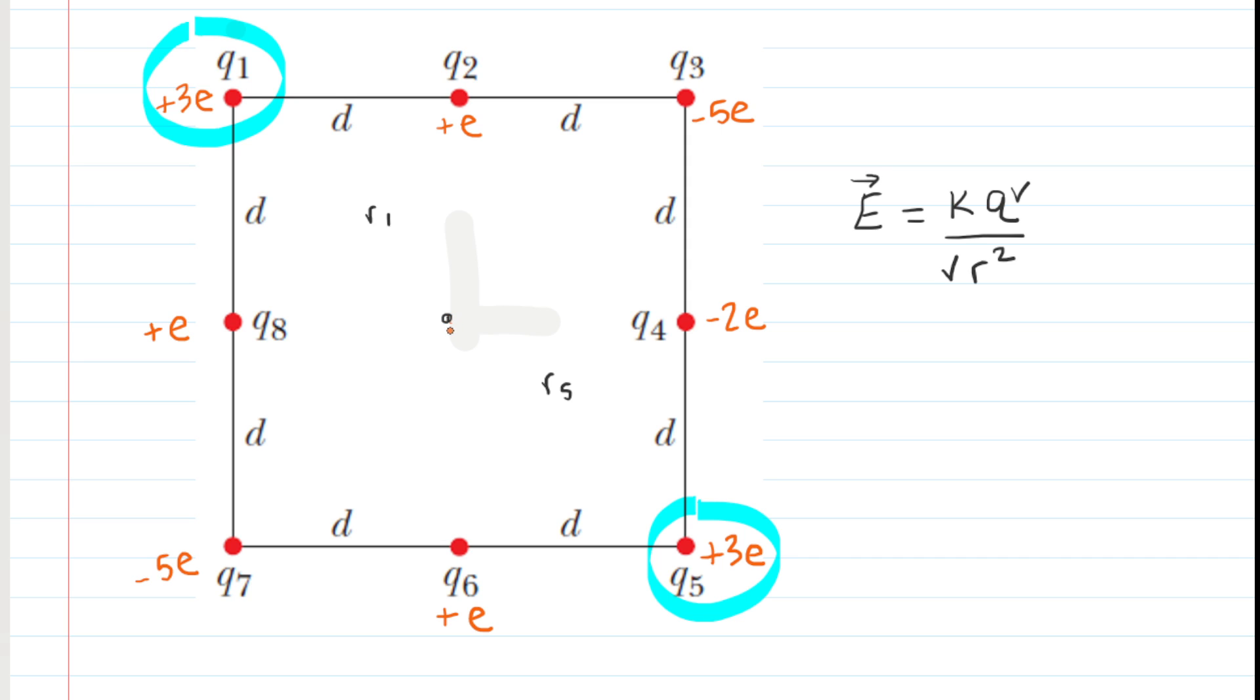Often professors tell their students to imagine putting a positive test charge at the location of interest and then ask yourself in which direction would that positive test charge move. Would it move towards Q1 or would it move away from Q1? Well, of course, opposite charges attract, but like charges repel. So since they would be like charges, they would repel. That means that there would be a force pushing this test charge away from Q1.